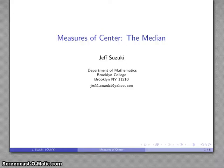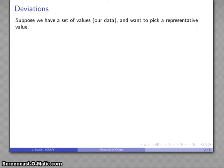Descriptive statistics is all about describing a set of data values using a couple of key numbers. One of those key numbers is known as a measure of center — some indication of where the data values are located. The introduction of a measure of center might begin as follows.